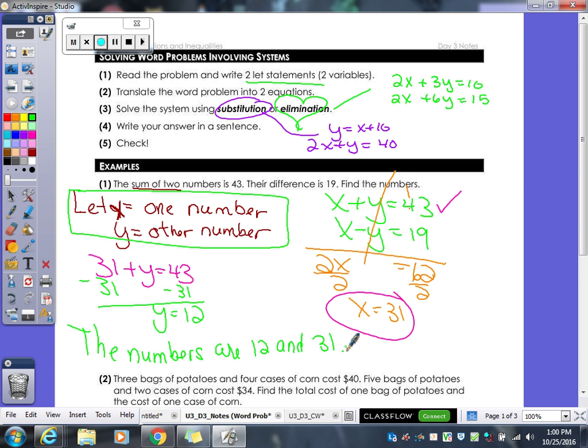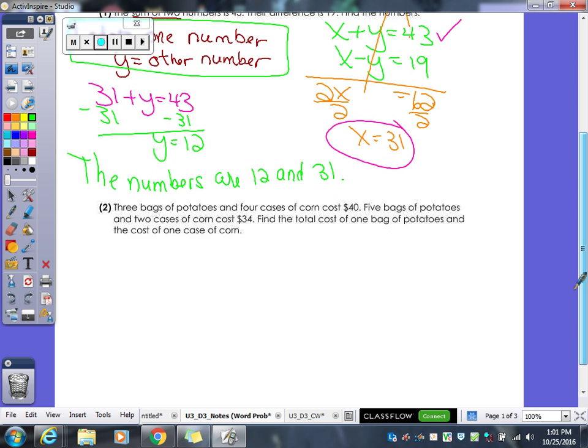Does everyone understand how we did that? Set up two variables, two equations. Again, how you know it's unlike the ones we did already because we're not comparing them to each other. We're not saying one is four times the other. That's why we have to make them two different letters, not the same letter.